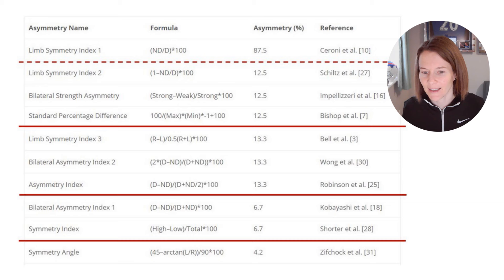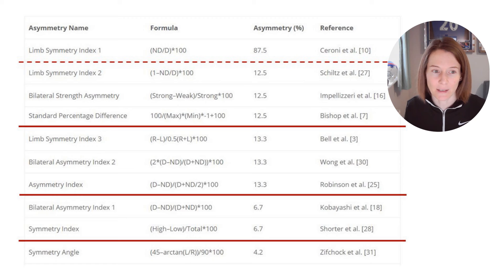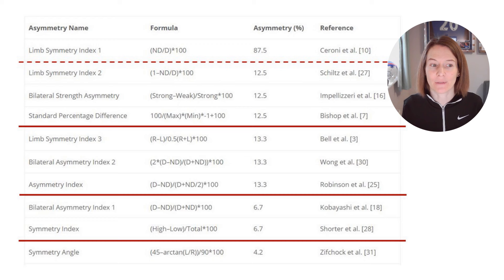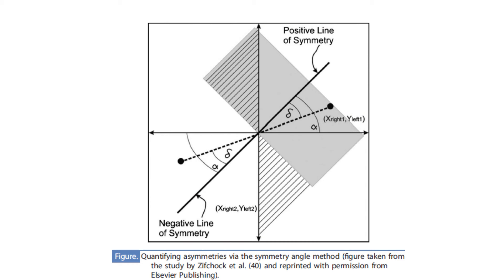The symmetry angle is quite a different approach, giving us the lowest asymmetry percent difference of 4.2%. It benefits from not needing a reference value, avoiding the limitations of dominance or max/min approaches. As illustrated in Chris's paper, if two identical values are plotted on a matrix, they create a vector at 45 degrees relative to the x-axis. These values are then converted into a percentage, with perfect symmetry reflected as 0%.